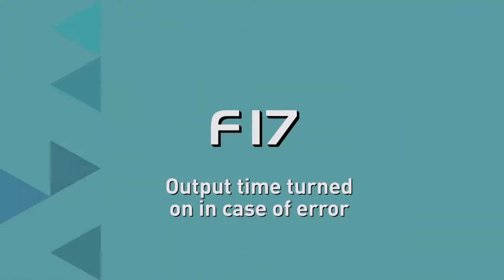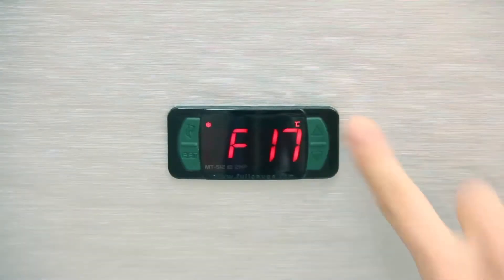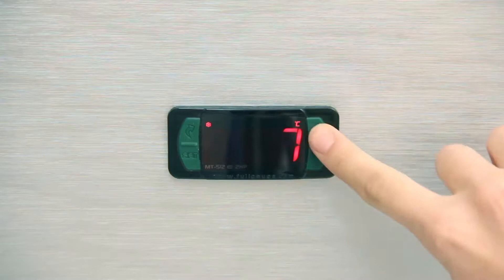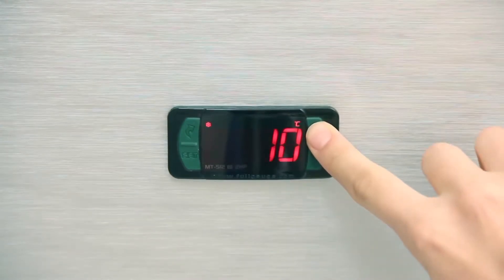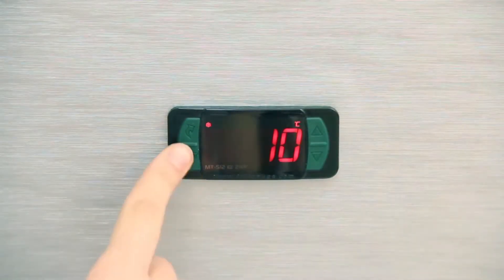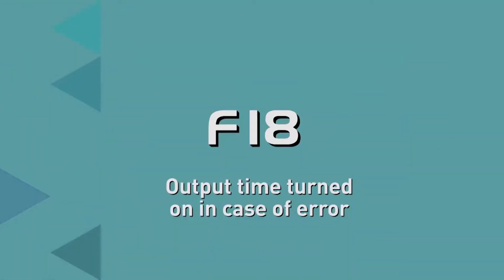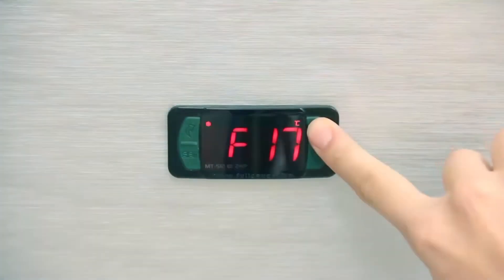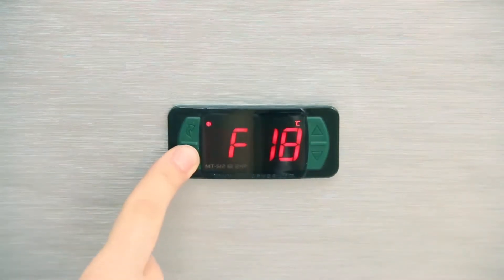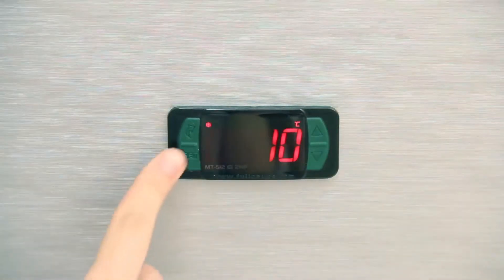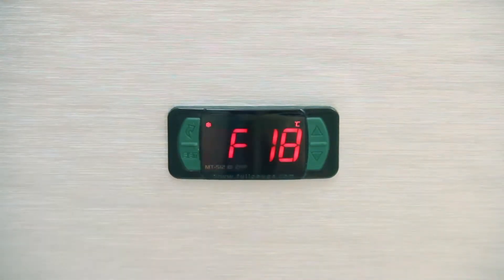F17 Output Time turned on in case of error: It sets the minimum time the compressor will stay on if the sensor is disconnected or out of the measurement range. In the example, we opted for 10 minutes. F18 Output Time turned off in case of error: It sets the minimum time the compressor will stay off if the sensor is disconnected or out of the measurement range. In the example, we opted for 10 minutes.